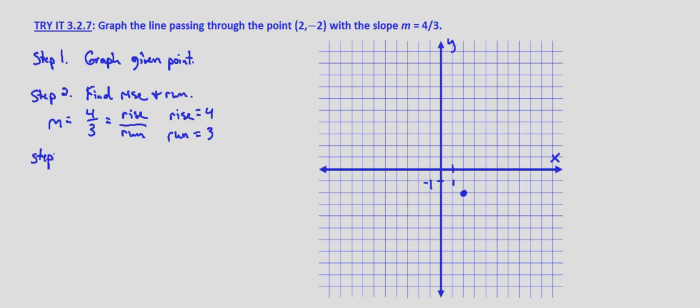So step three, use rise and run to graph a point from the given point. So rise is 4 so we want to go up 4 and right 3 and that's from our given point. So we're starting at 2 negative 2 and we want to go up 4 and right 3. So that gives us the point 5, 2.